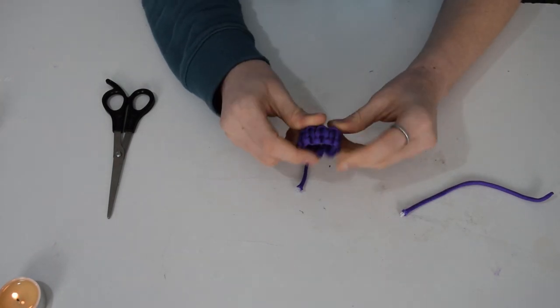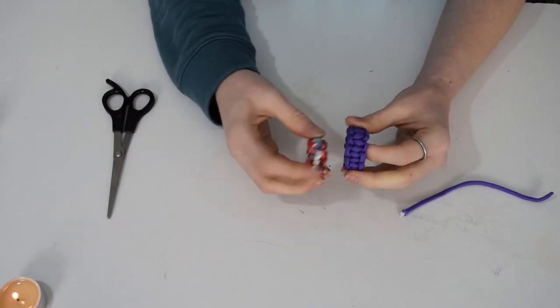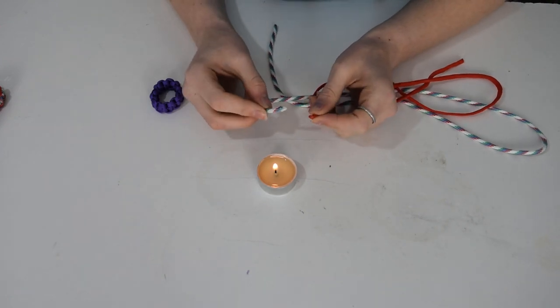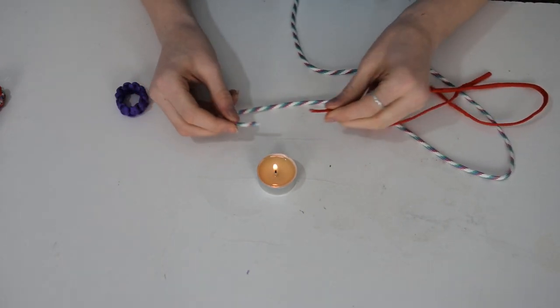You could just leave it as one layer like this one that I've already made, but I'm going to show you how to make a two-layered one. To make my outer ring I'm using two different colors and first I need to join them together by melting them.